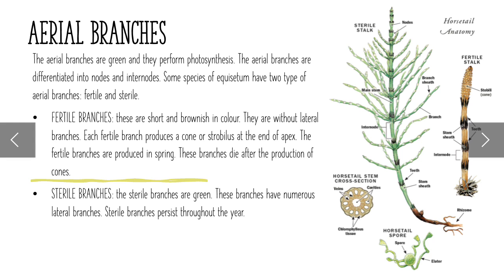Some species of Equisetum have two types of aerial branches: fertile and sterile. Fertile branches are short in structure and brownish in color. They are without lateral branches, and each fertile branch produces a cone or strobilus at the top. Fertile branches are produced in spring and dry after cone production. Sterile branches are green, have numerous lateral branches, and persist throughout the year but have no ability to reproduce.